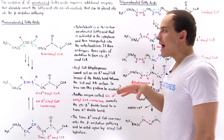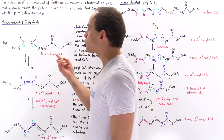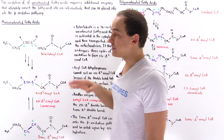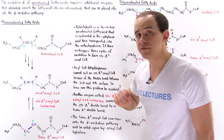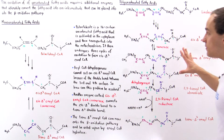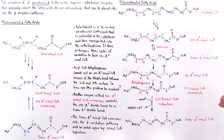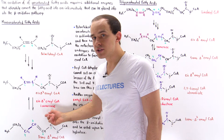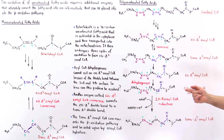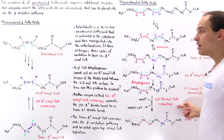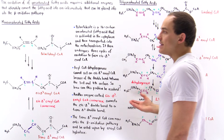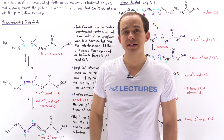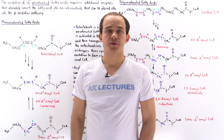In summary, no matter what type of unsaturated fatty acid we ingest — whether it contains an odd number of double bonds or an even number of double bonds — our cells can use an isomerase, or in the even case a combination of an isomerase and a reductase, to transform and break down those fatty acids into acetyl-coenzyme A molecules.